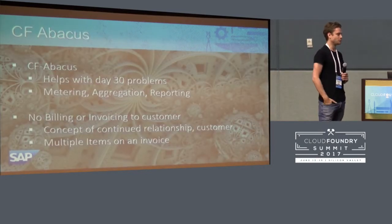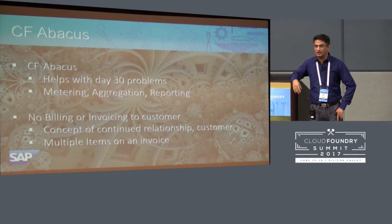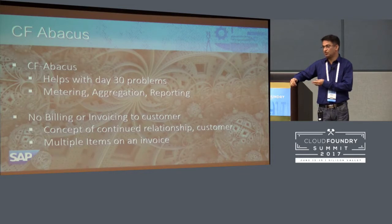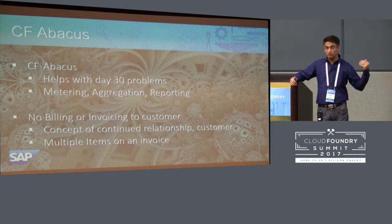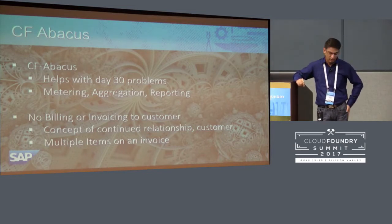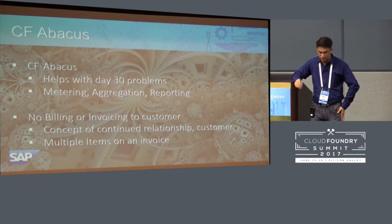So what we are going to use for this is CF Abacus. CF Abacus is a metering and aggregation engine. When you have an application that needs to be metered — maybe you're calling certain APIs, you want to track how much compute or persistent storage has been used — you can measure that using CF Abacus. You essentially send certain calls to CF Abacus. It's a neat open-source solution; IBM and SAP have contributed quite a lot of code to it. It's a set of about six microservices: one for metering, one for collecting, then accumulation and aggregation.